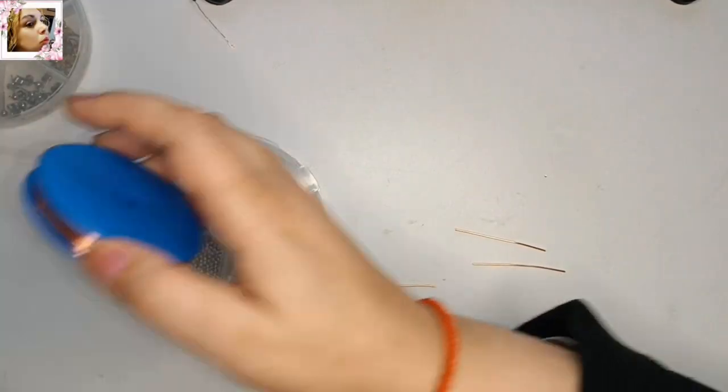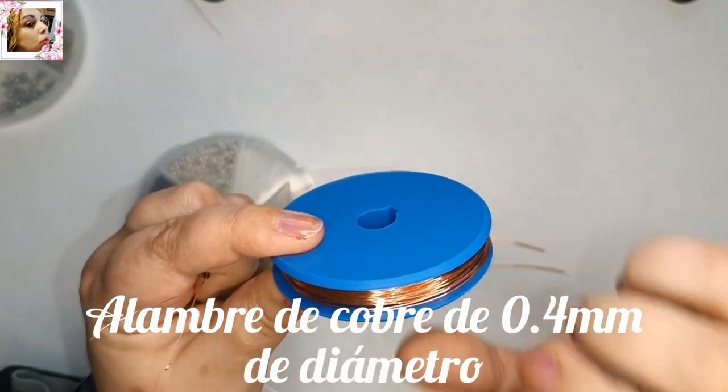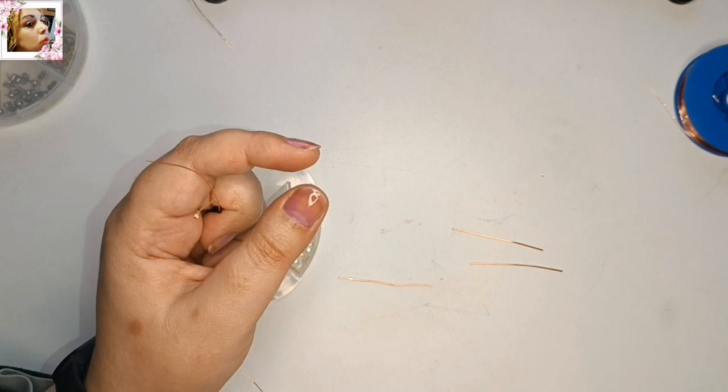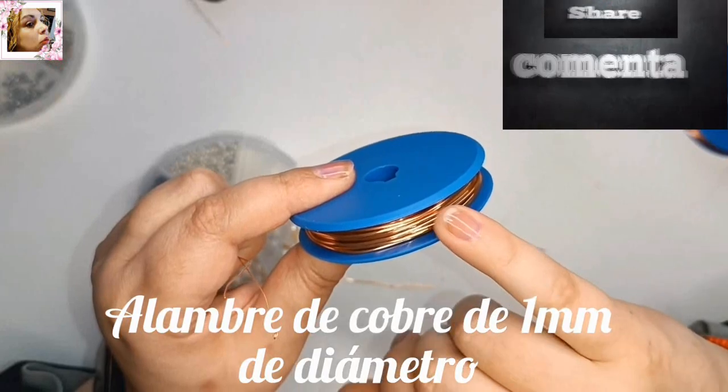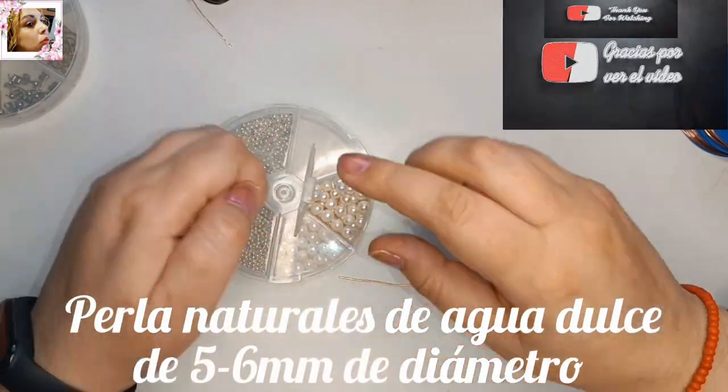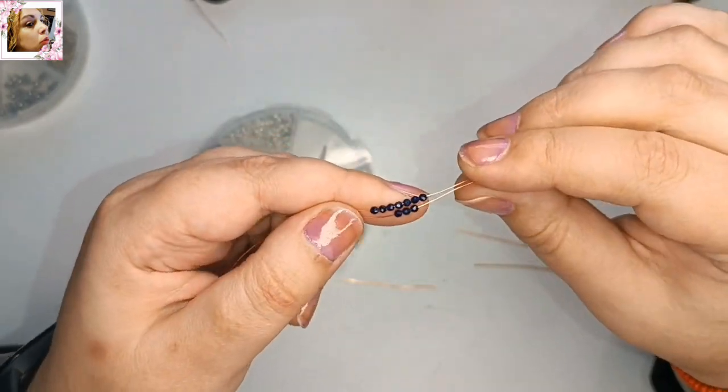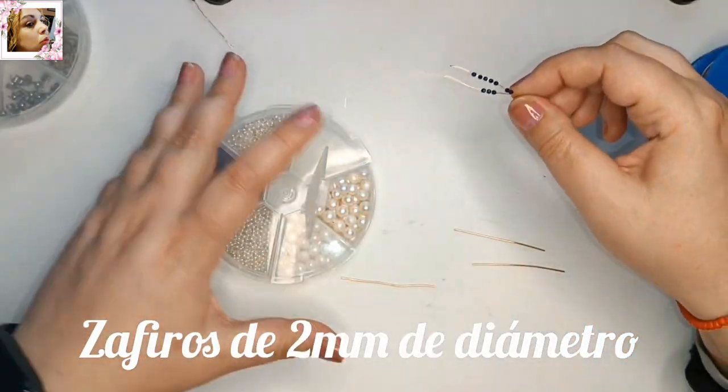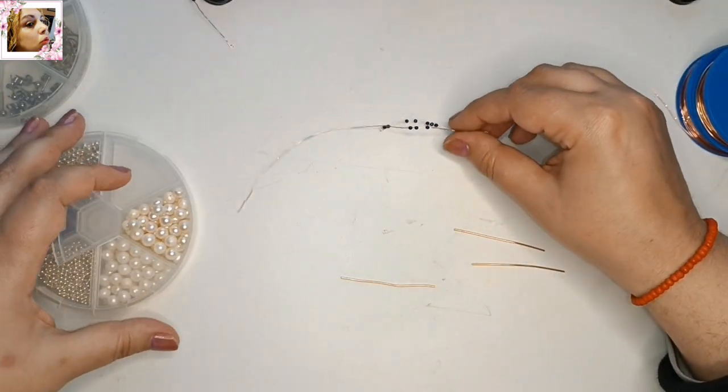For this work I'm going to be using copper wire of 0.4mm diameter. I also have copper wire of 1mm diameter. I can use the beads again - I still have them here on the wire. I'm going to use sapphires of 2mm diameter. The pearls are between 5 and 6mm diameter.